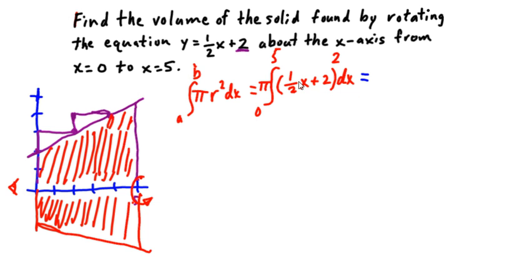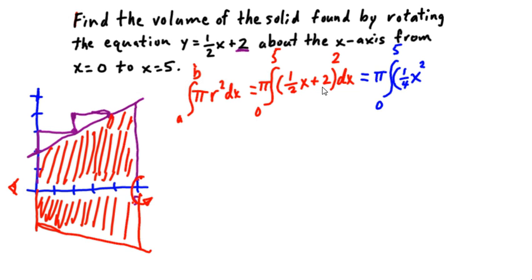Next, we're going to multiply this out — one-half x plus two, quantity squared. We're going to have pi out front, from zero to five. Squaring this binomial: one-half x times one-half x is one-fourth x squared. Then we FOIL: one-half x times two is x, and that term appears twice, giving two x. Plus two squared, which is plus four. Times dx.